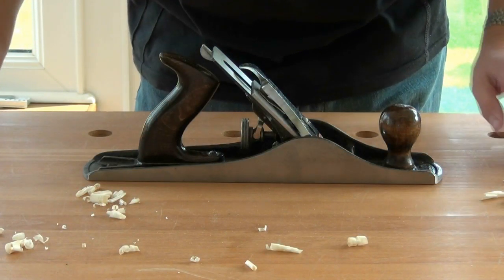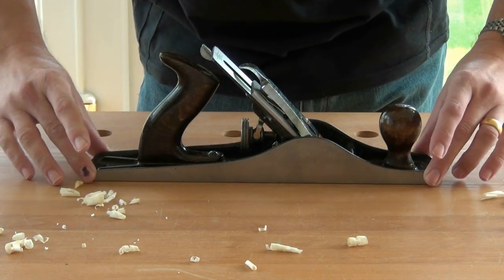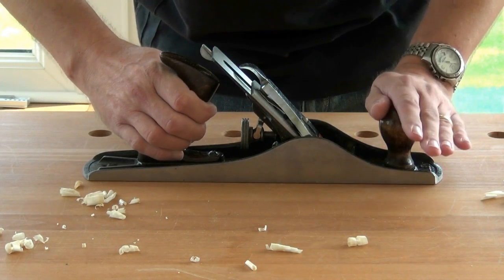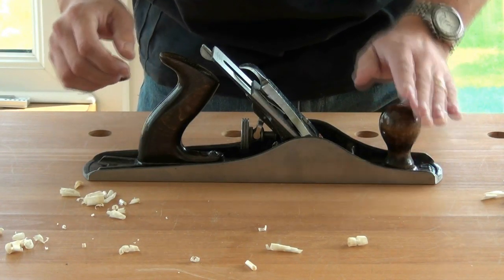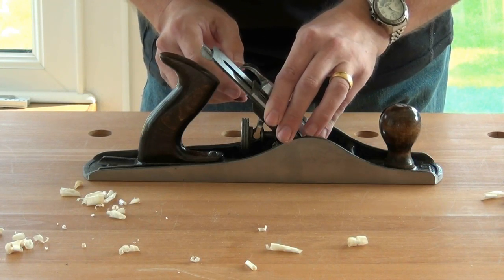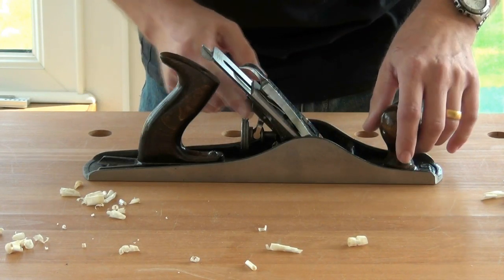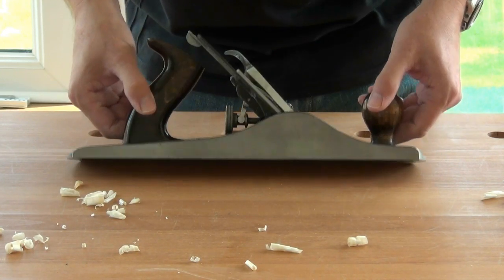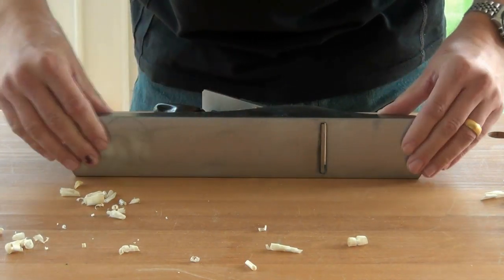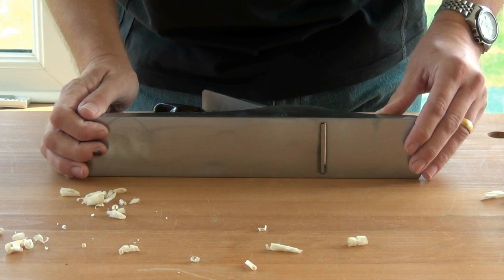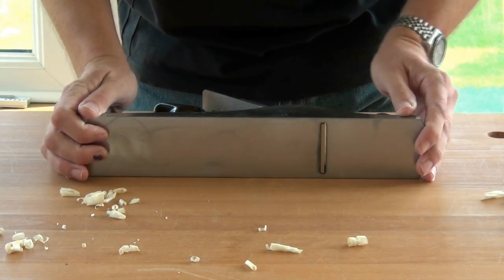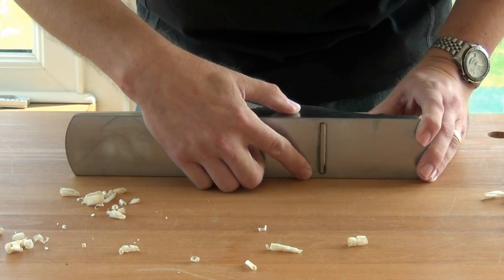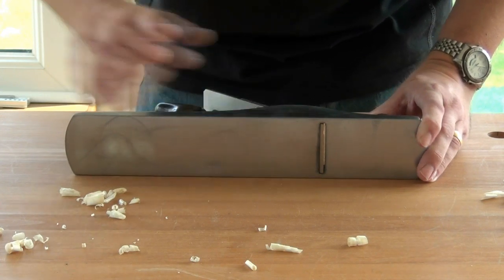The main parts of the plane are the body, the rear handle or tote, and the front handle or knob, and then the blade assembly which sits upon a frog. The bottom of the main body is referred to as the sole, the rear of it being the heel, the front of it being the toe. And there is a slit through which the blade emerges to take shavings. That's called the mouth.